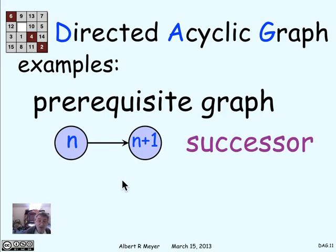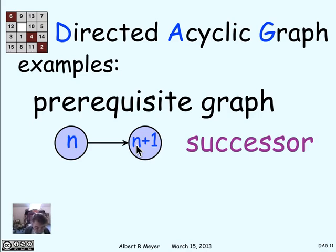One example you might not have thought of: the successor function defines a relation on the integers, going from n to n+1 — so there's an arrow directly from n to n+1. The positive length walk relation in this graph means there's a positive length walk from n to m precisely when n is less than m. So the successor DAG's paths represent the less-than relation. And of course less-than has no cycles, because if a is less than b you're never going to get around from b back to something less than it like back to a. So there can't be any cycles in the successor DAG — that's why it is a DAG.